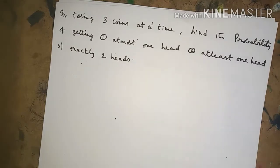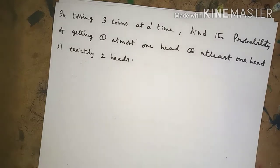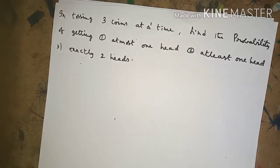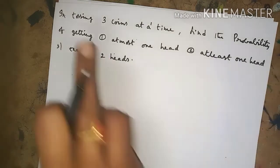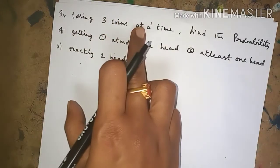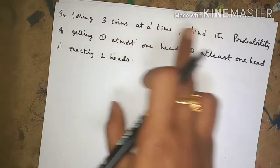If you toss 1 coin, the total number of elementary events is 2. If you toss 2 coins, it is 2 into 2, which is 4. In the same way, if you toss 3 coins, the total number of elementary events is 2 into 2 into 2, which equals 8.